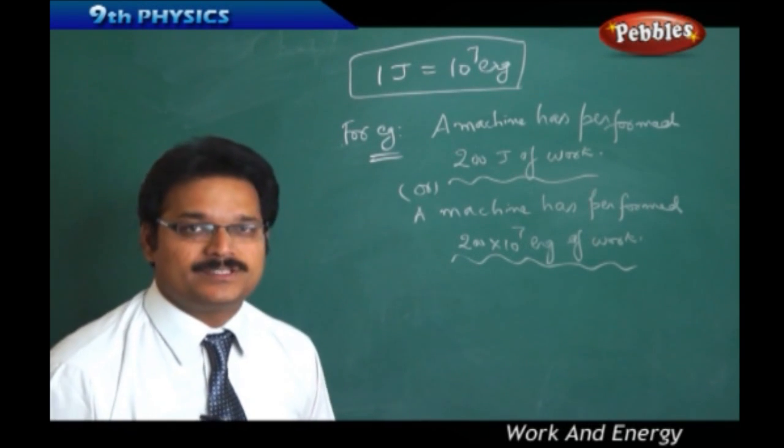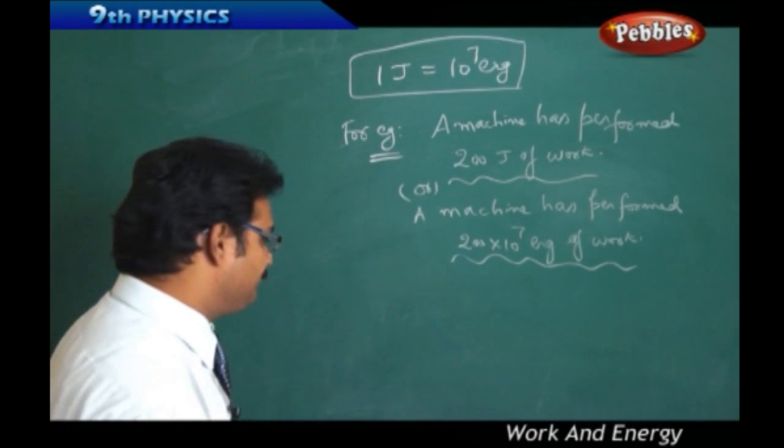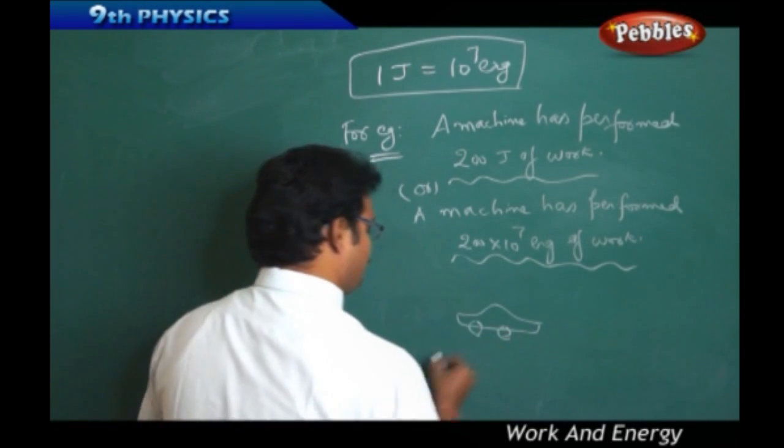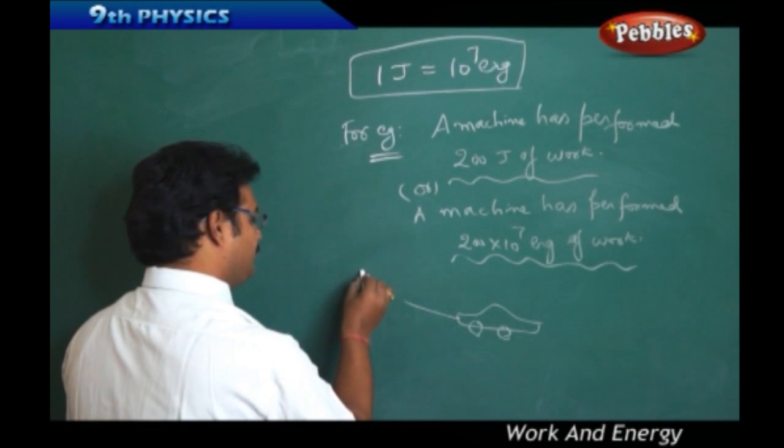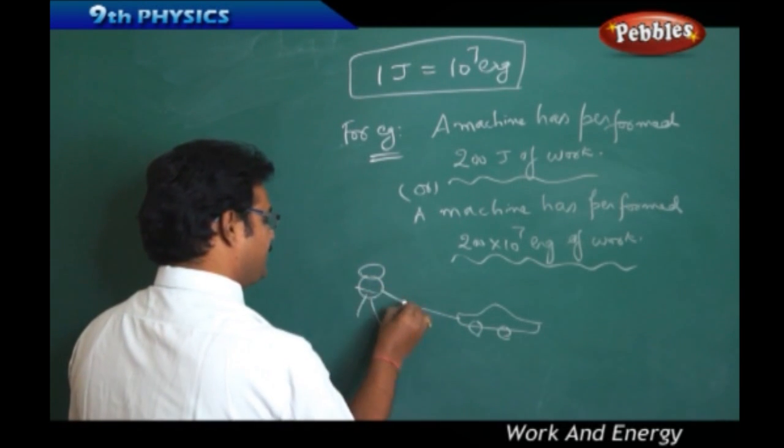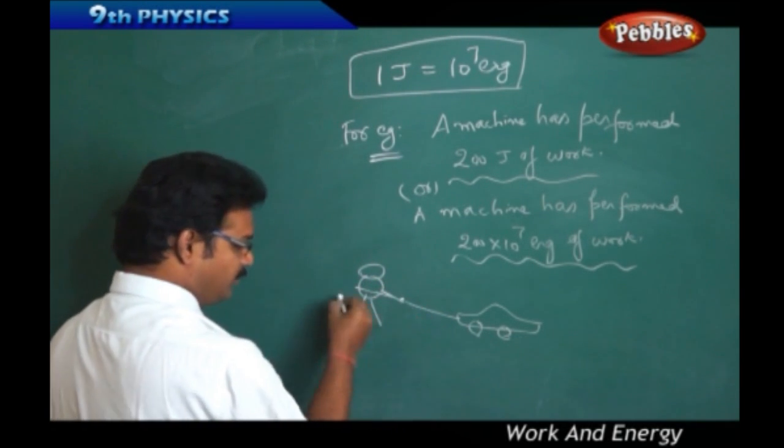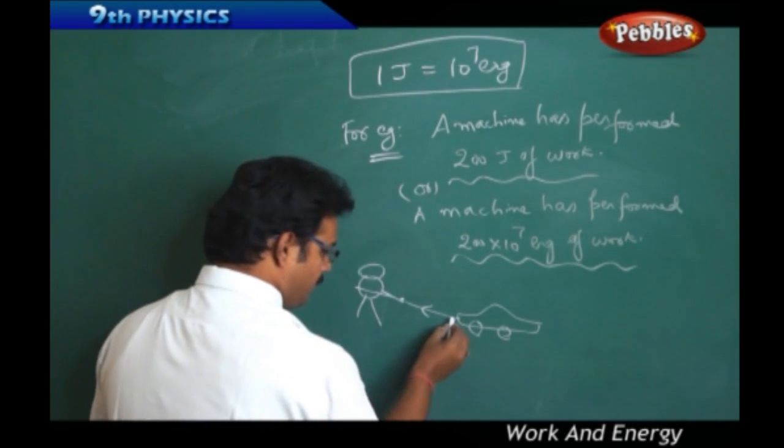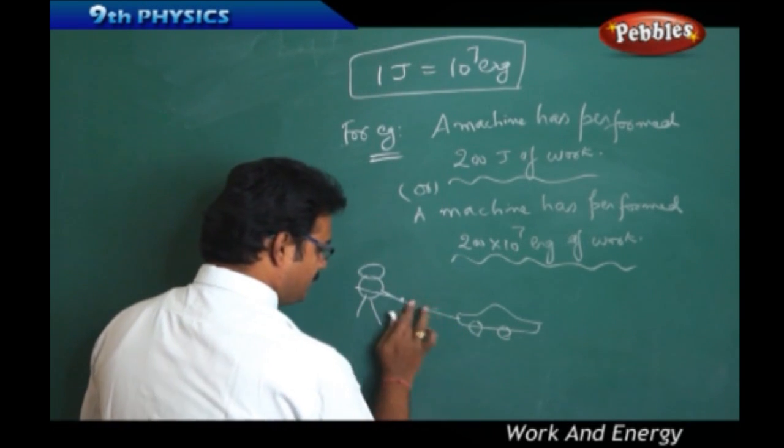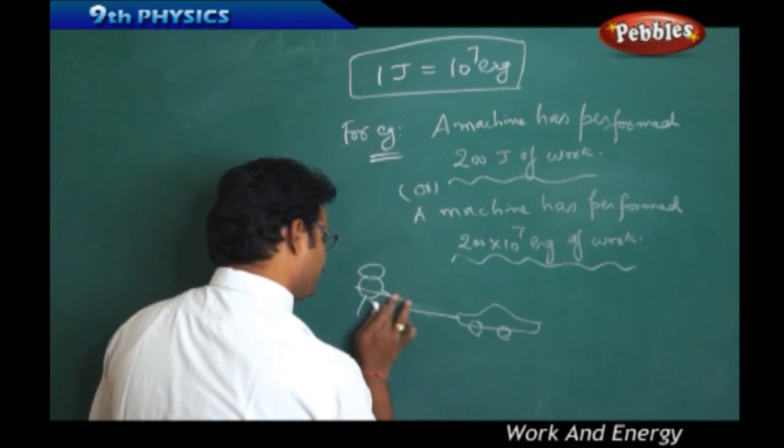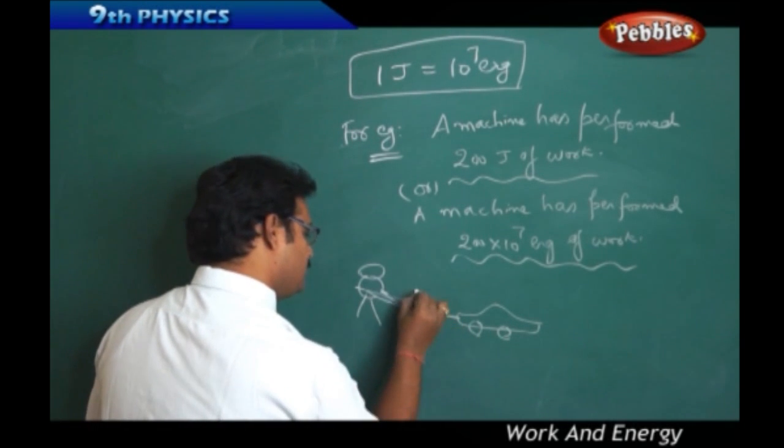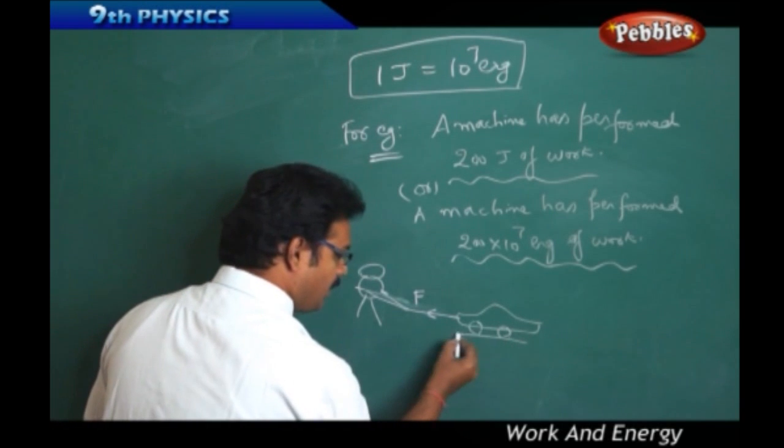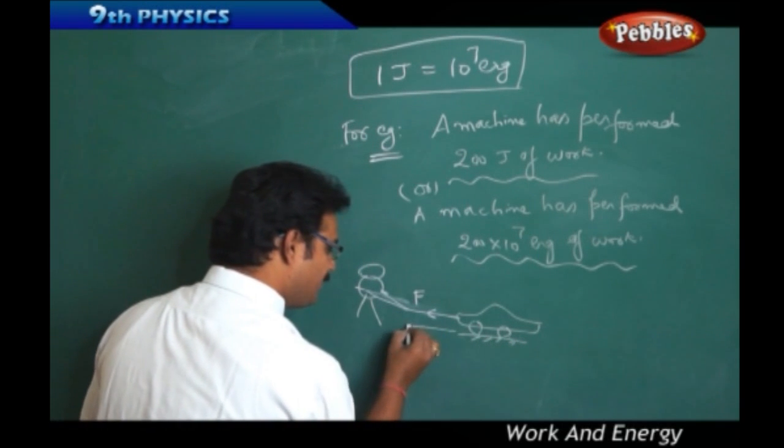There is a toy car pulled by thread. One person is pulling the toy car using a thread. Then, as it is using the thread, this is the thread in this direction. So, this is the force applied towards left side. And, the car is also moving the same direction. So, displacement is also in the left side.